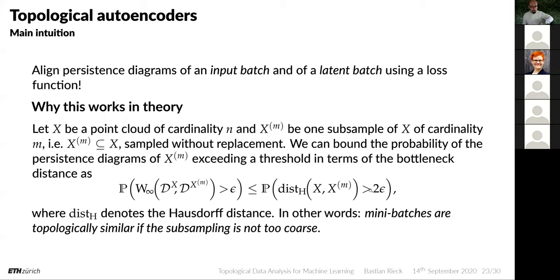The key intuition is to align persistence diagrams of an input batch and a latent batch using a loss function. This works because a theorem shows that if we subsample a point cloud repeatedly — essentially doing batches — we can bound the probability of the persistence diagrams of the subsample exceeding a threshold in bottleneck distance, bounded by the Hausdorff distance between the two point clouds. Mini-batches are topologically similar if the subsampling is not too coarse.